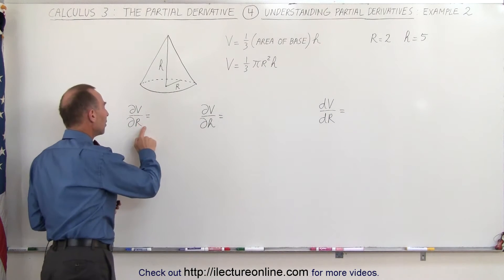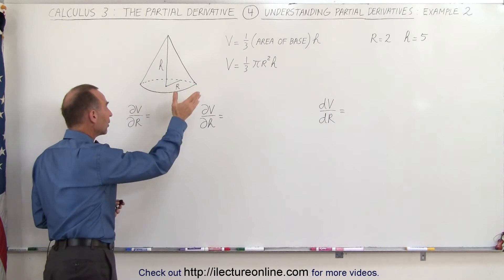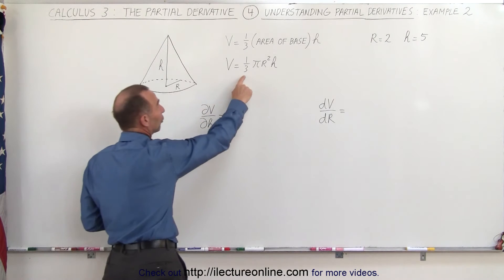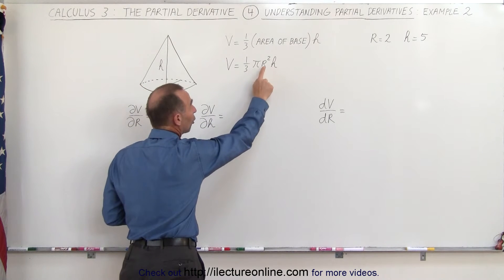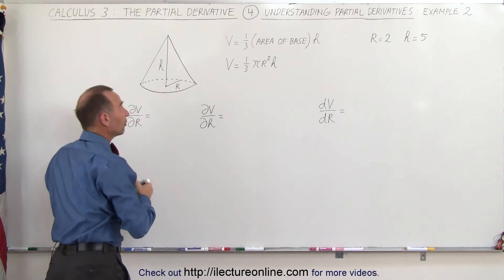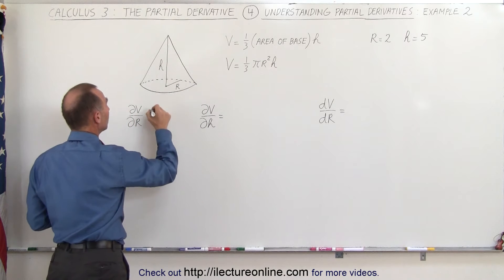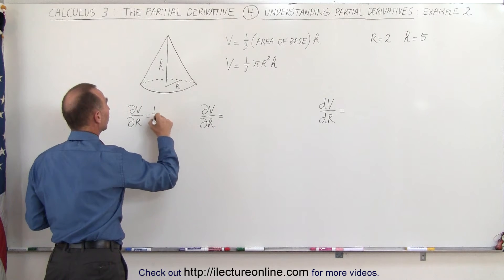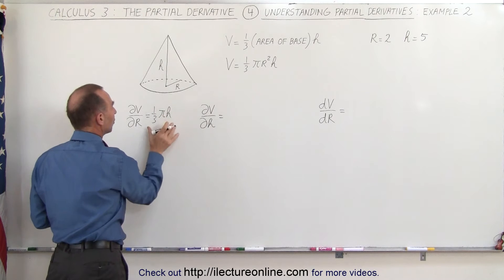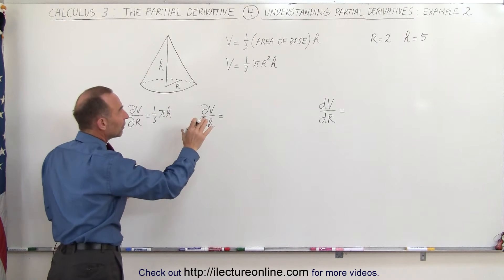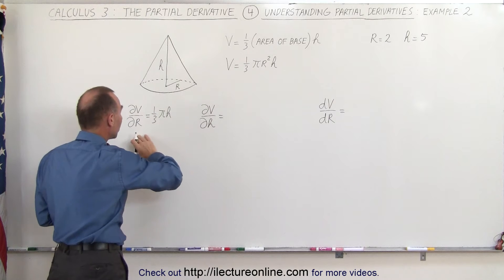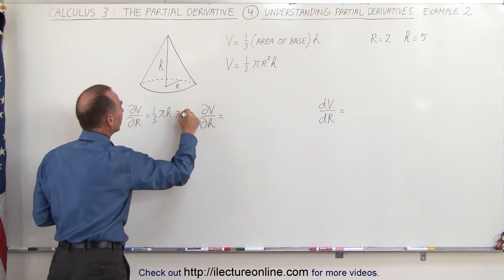Let's take the partial derivative of the volume with respect to r, which means that one-third pi and h become constant — only r squared is a variable. So that means it would be one-third pi times h, this would all be a constant, times the derivative of r squared with respect to r, which is 2r.